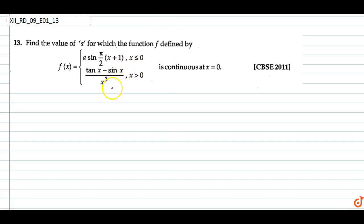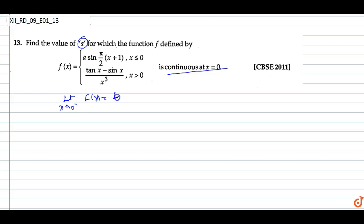In this question we have to find the value of a for which the function f(x) is continuous at x equals zero. For continuity, the limit x tends to zero minus f(x) equals limit x tends to zero plus f(x) equals f(0). So f(0): putting zero in the definition gives zero plus one, which equals one. So f(0) equals a.